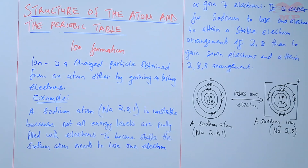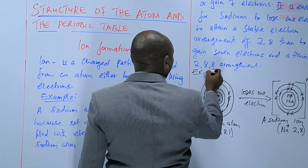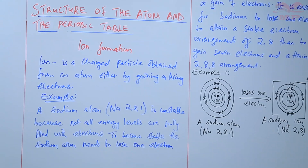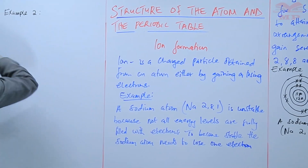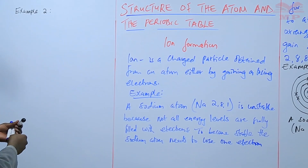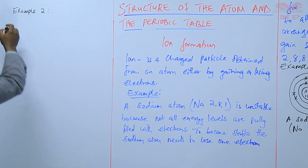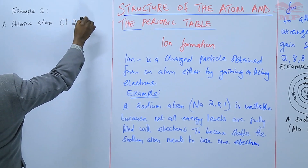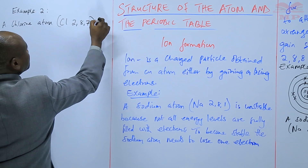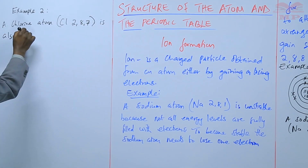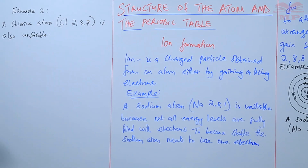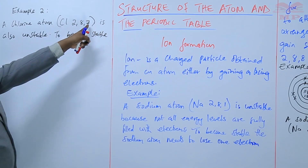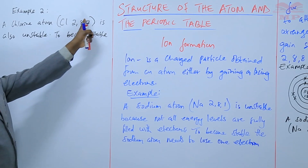So we're going to have another example — example two. This one we shall use a chlorine atom whose arrangement is 2,8,7, which is also unstable.